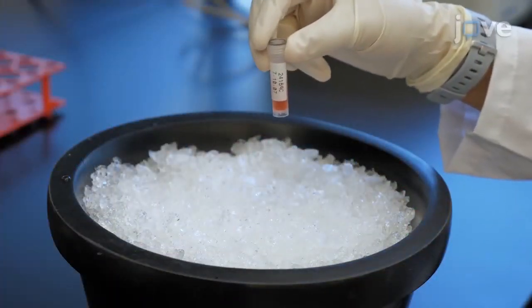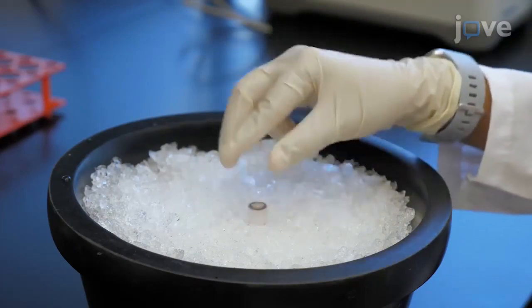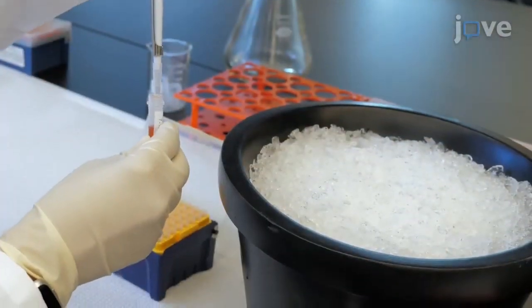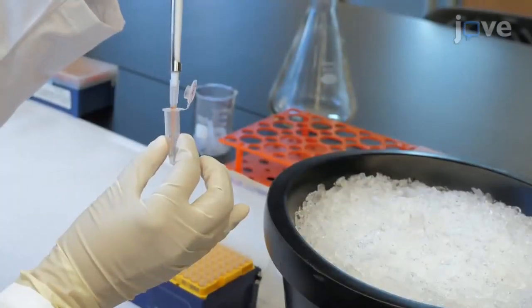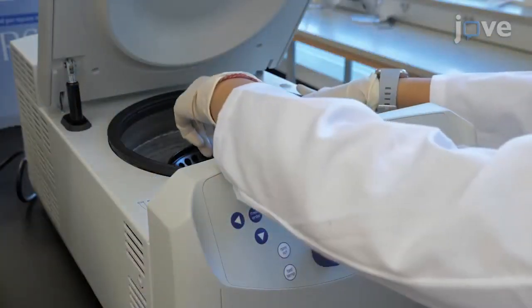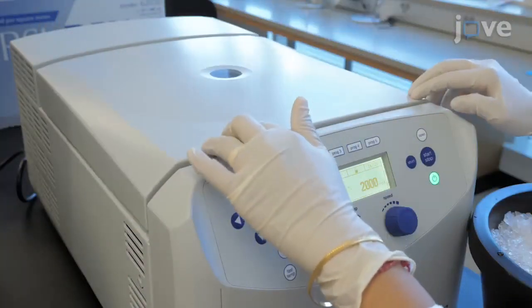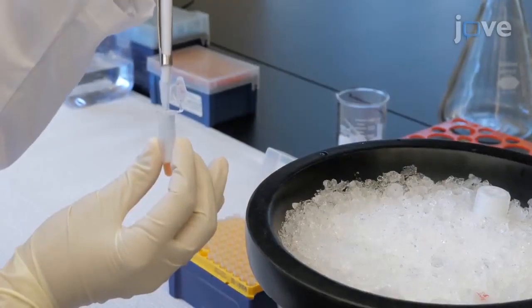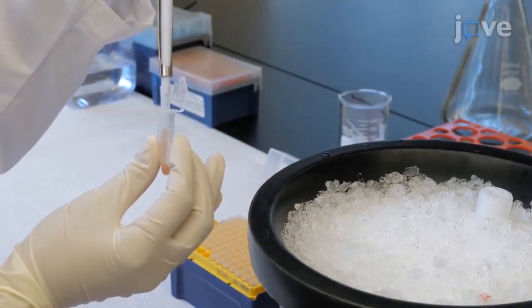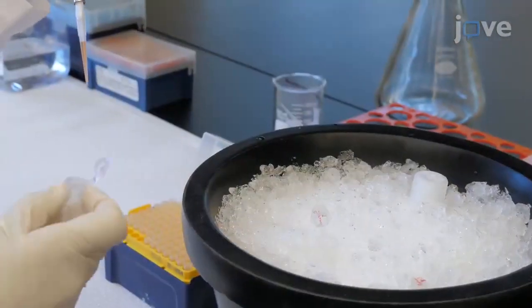Thaw frozen patient serum samples at 4 degrees Celsius. Transfer 110 microliters of thawed serum sample to a tube and spin at 2,000 times G for 30 minutes. Collect the supernatant for subsequent EV or exosome isolation and discard the debris pellet.